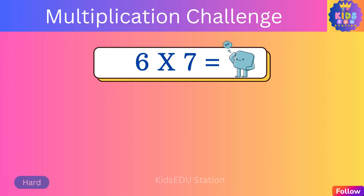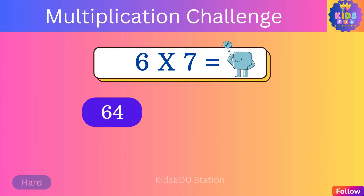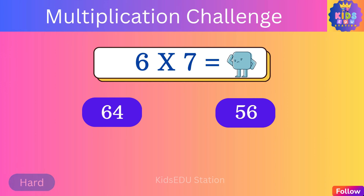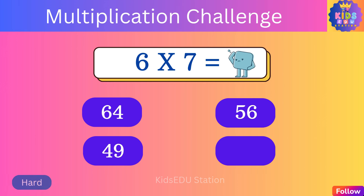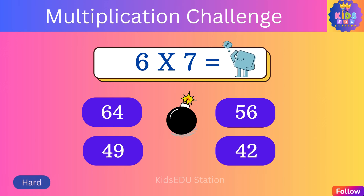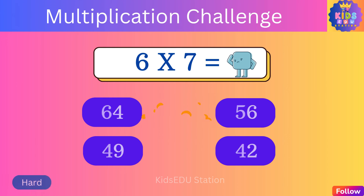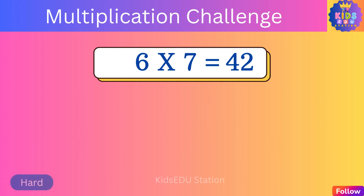What is six times seven? Sixty-four, fifty-six, forty-nine, forty-two. Six times seven is forty-two.